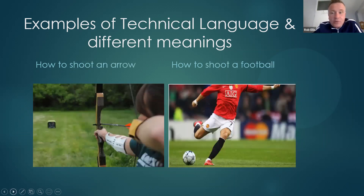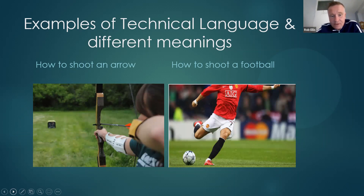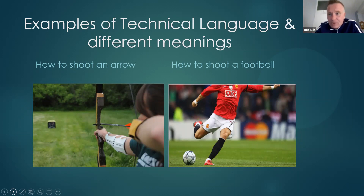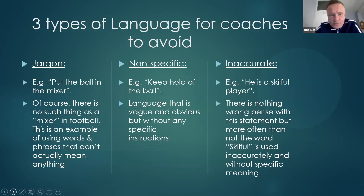Take the verb 'to shoot.' It has a general meaning in everyday life, but in a sporting context shooting an arrow in archery is very different to shooting a football. We know approximately it's about hitting a target, but the techniques for teaching someone to shoot an arrow are a million miles from how you teach someone to shoot a football.